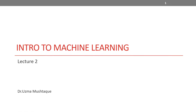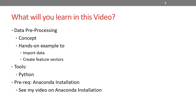Hi everyone, welcome to lecture two. This is Intro to Machine Learning. In this video, you're going to learn about data preprocessing. We'll talk about the basic concept behind data preprocessing, and we'll look at examples of how to import data and then create feature vectors. The tools I'm using are Python, so if you're familiar with Python, that's good. You also need to have Anaconda installed because we'll be using some libraries that come with the Anaconda installation. If you don't have Anaconda installed, you can check my video on Anaconda installation — it's video two in the playlist, Intro to Programming with Python.